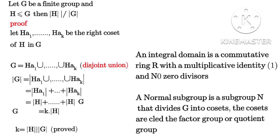Here we have to prove Lagrange's theorem. Since G is a finite group and H is a subgroup of G, then the order of H divides the order of G. That is the statement of Lagrange's theorem. To prove it, we let H·a₁ up to H·aₖ be the right cosets of H in G.